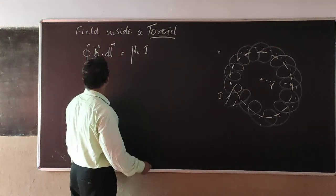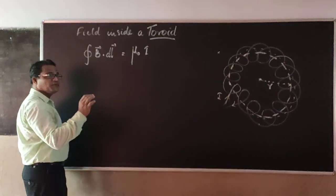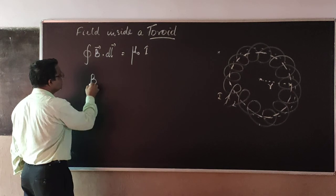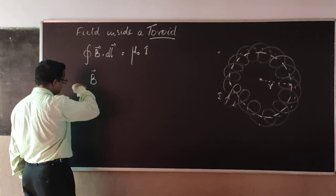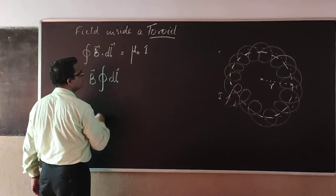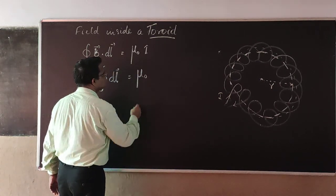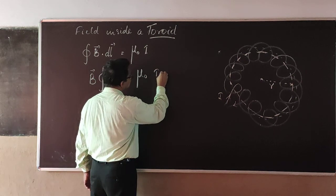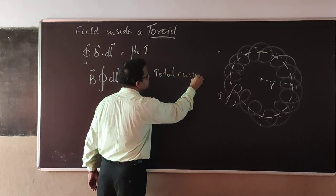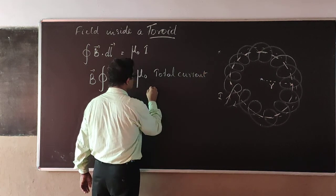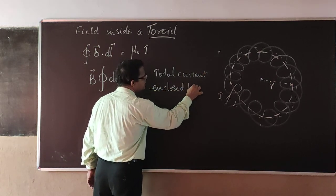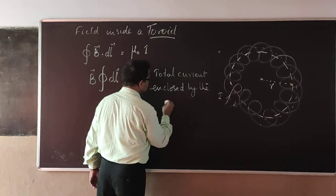Then, the magnetic field inside the loop is constant everywhere. And therefore, you can take that outside, and the integral of dL will be equal to μ₀ into total current enclosed by the loop.